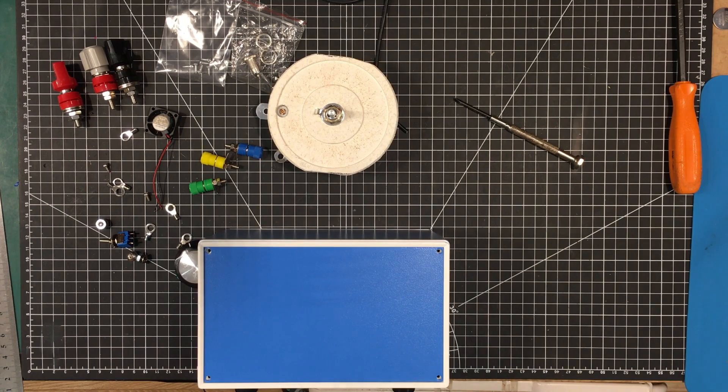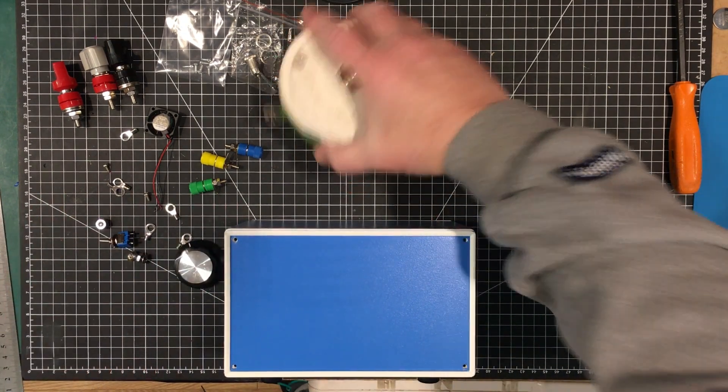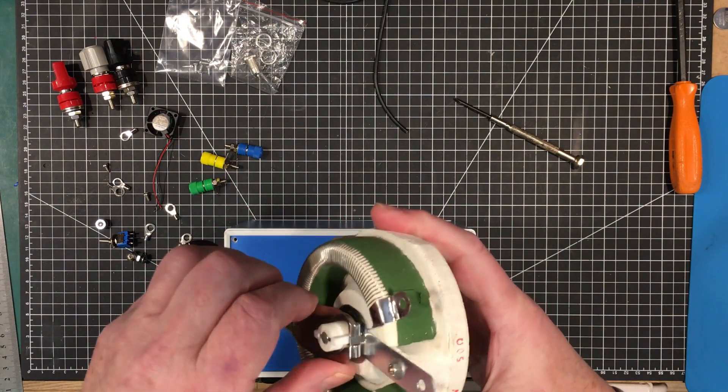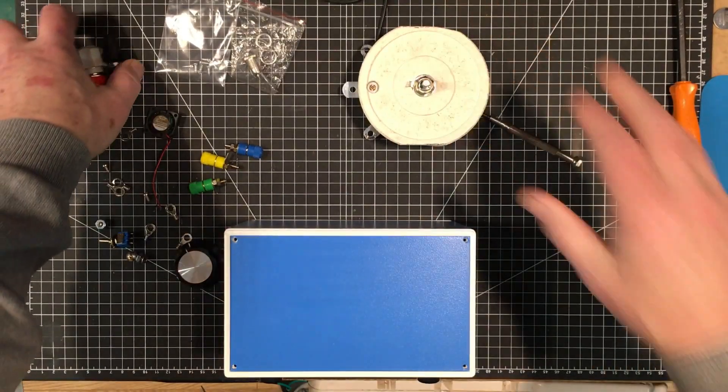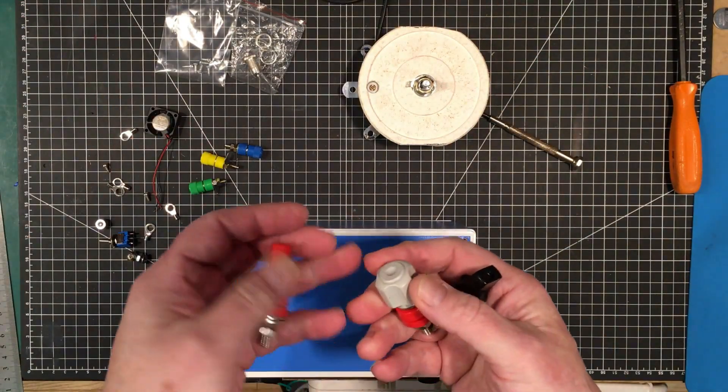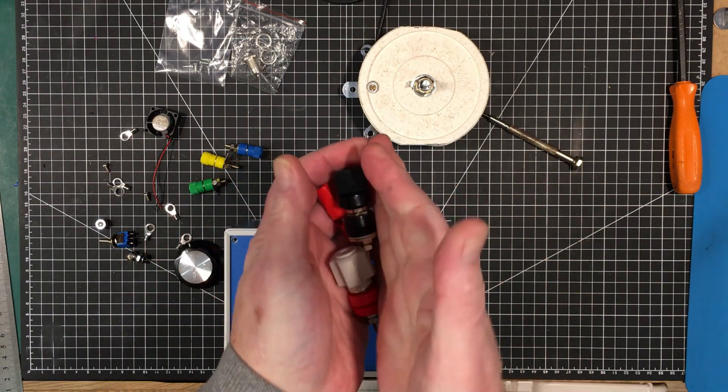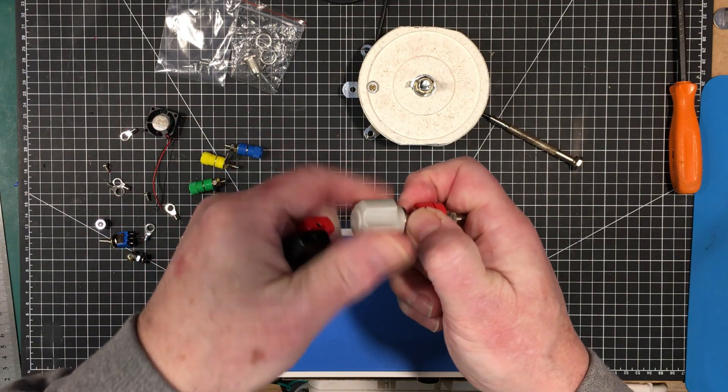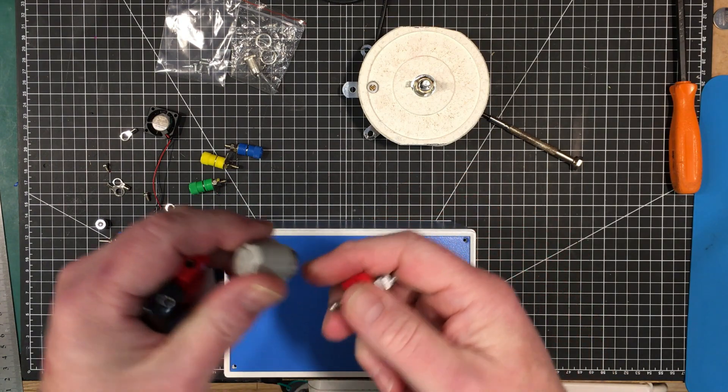We're using this 200 watt variable resistor here. I was originally going to use these really heavy-duty looking, very snatchy binding posts with four millimeter sockets in them. This is a knob off my signal load.